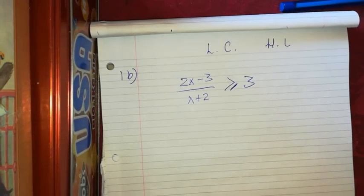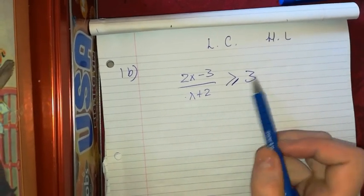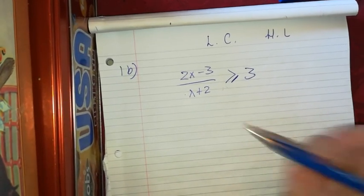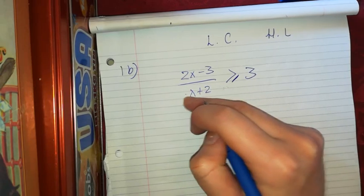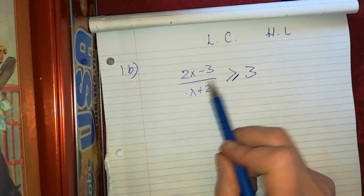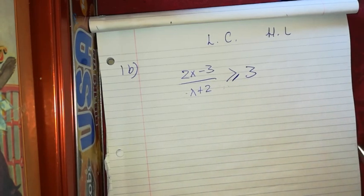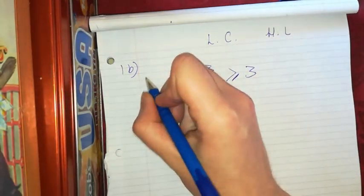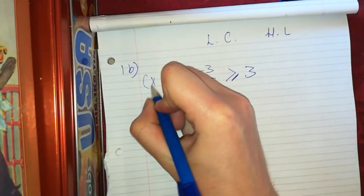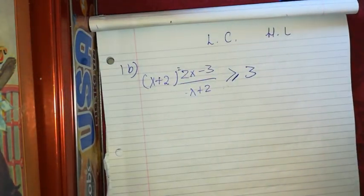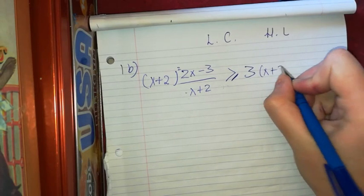When I have an inequality like this, I first need to get rid of my fraction. If I just multiply both sides by the denominator, I don't know if that's going to be positive or negative, so I have to multiply both sides by the denominator squared, because a square number is always going to be positive. If I multiply an inequality by a negative, I have to change the sign, so to be 100% sure I'm multiplying by a positive, I'll multiply both sides by (x plus 2) squared.